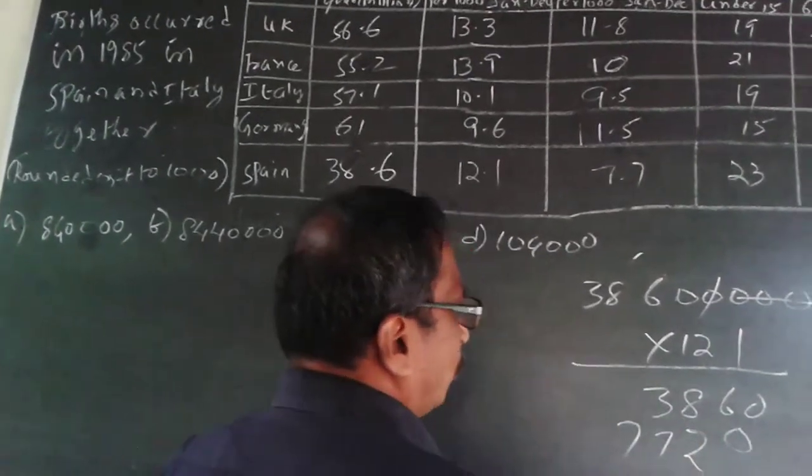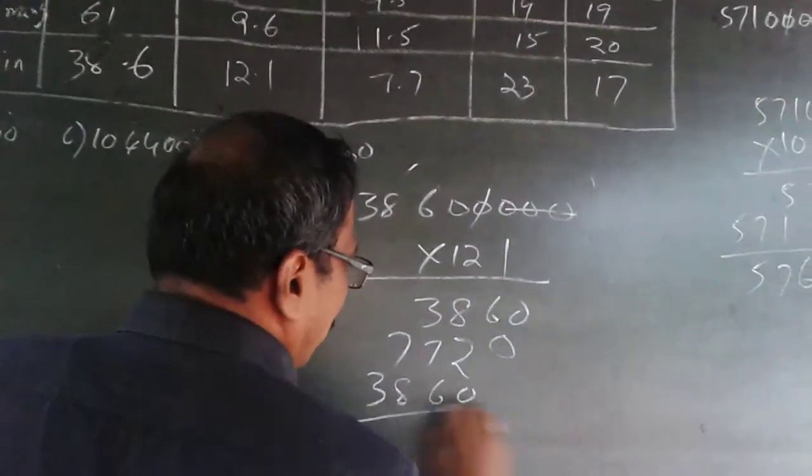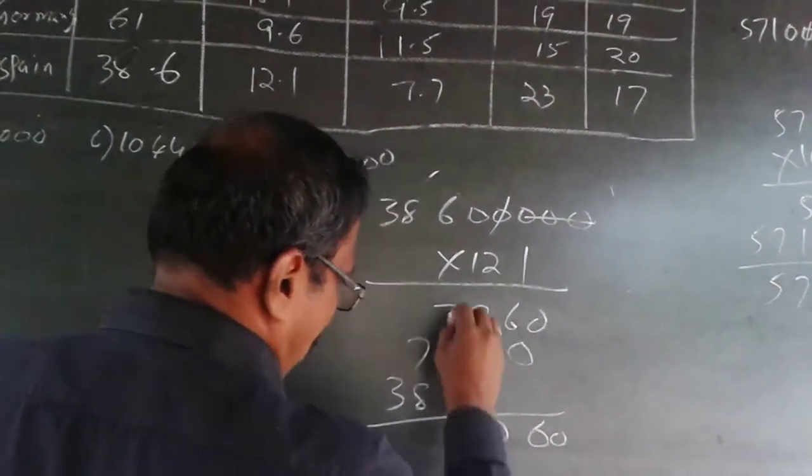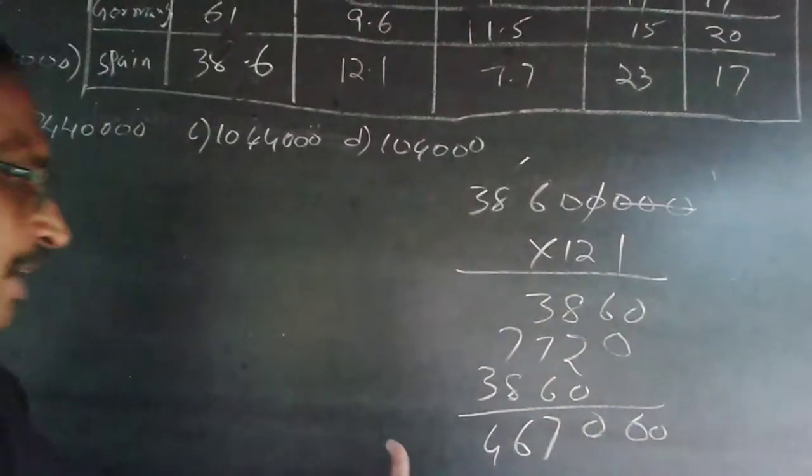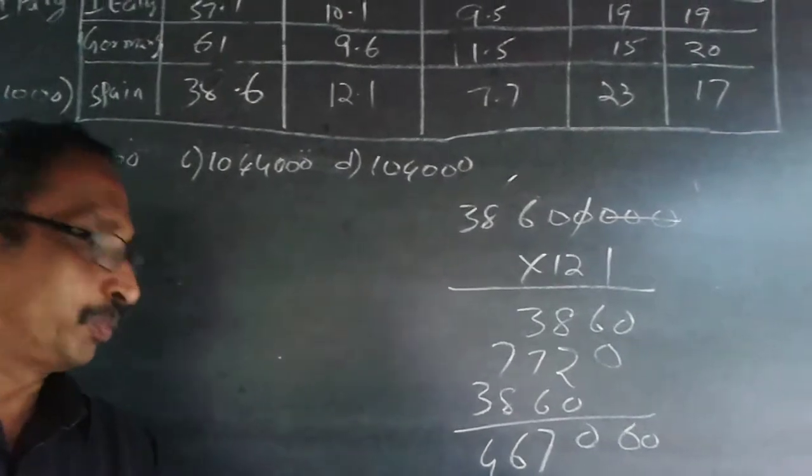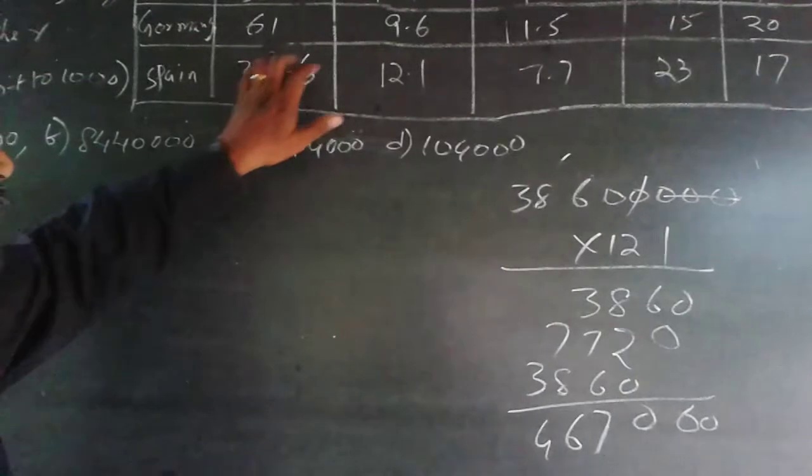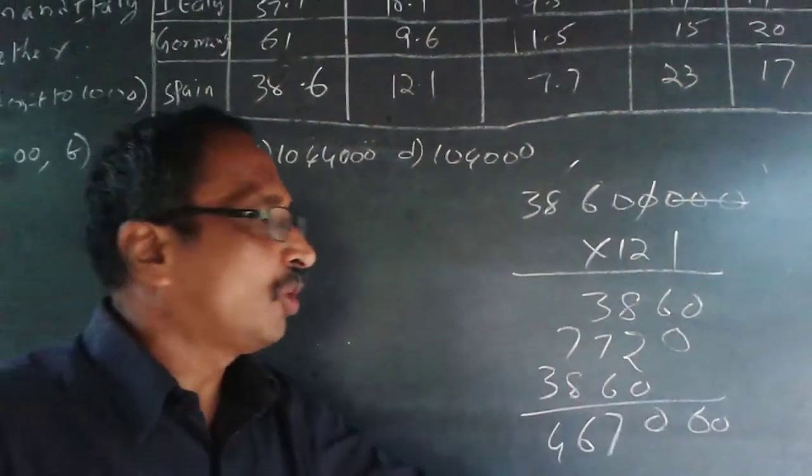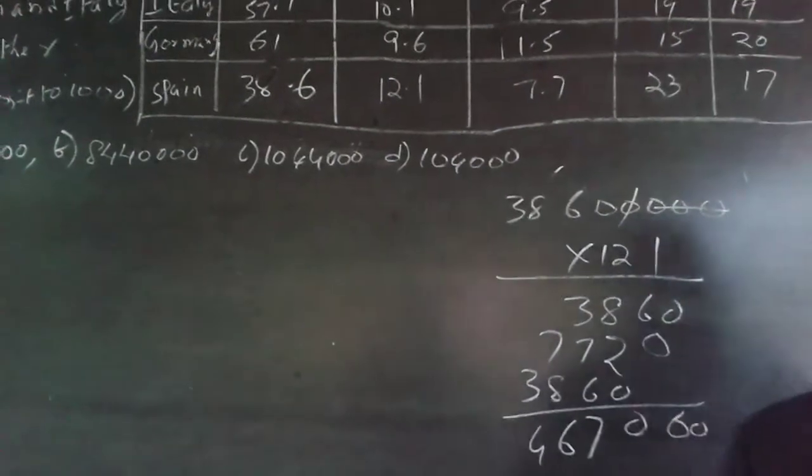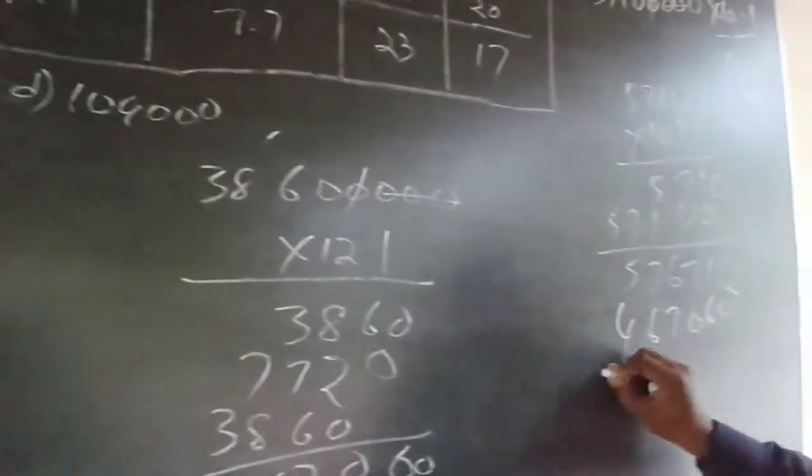So this will be 3860, then zero here, and it will be 77,720, and again 3860. When totaled, this will be 467,060. So Spain live births is 467,060. Add it along with Italy's 576,710, so this will be 1,043,770.